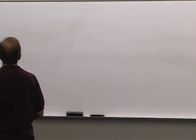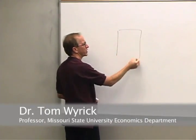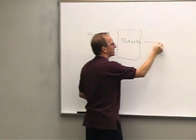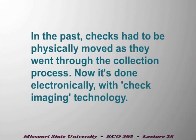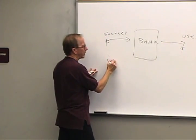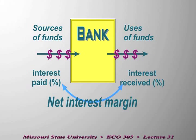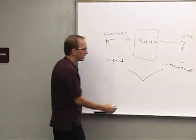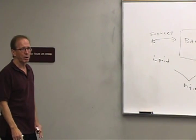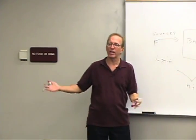Today we want to finish up our discussion of banking. We've been talking about on-balance sheet activities — the sources of funds coming in: deposits, borrowing, and capital — and the uses of those funds: primary reserves, secondary reserves, loans, and investments or bonds. There's interest paid to acquire these funds and interest received on them. The difference is what we call the net interest margin, and this is the bulk of where banks get their profits.